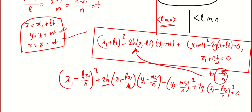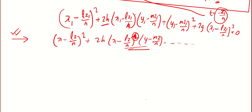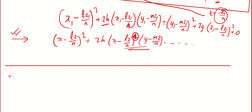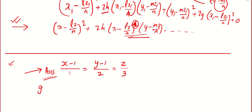We need to replace x1, y1, z1 by x, y, z. So the required locus is: (x − lz/n)² + 2h(x − lz/n)(y − mz/n) + (y − mz/n)² + 2g(x − lz/n) = 0. Then take the LCM if you wish to simplify. For practice, try: find the equation of a cylinder with axis x − 1)/1 = (y − 1)/2 = z/3 and guiding curve x² + 2y² = 1, z = 0.